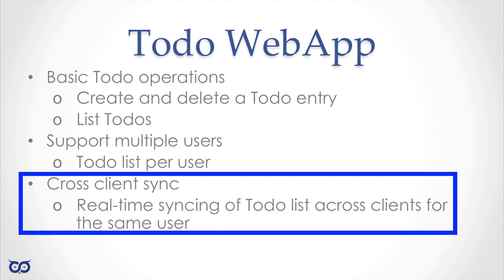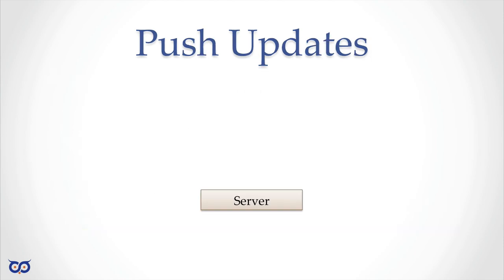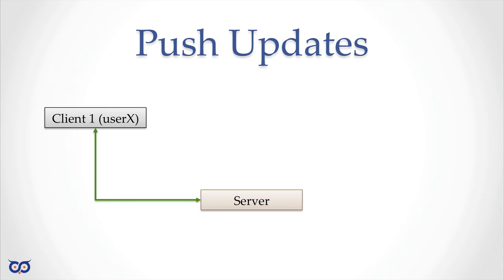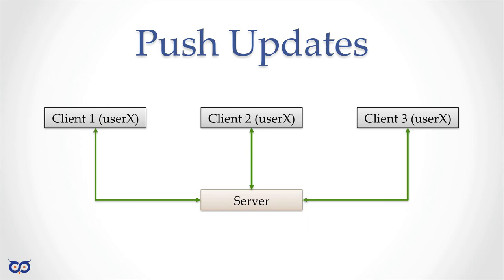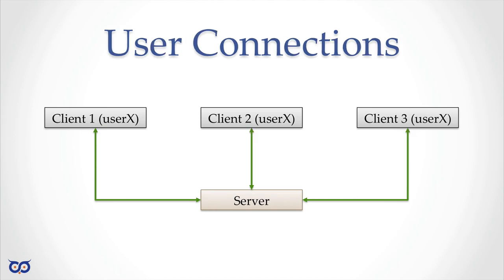If the user makes a change in one client and they're logged in on one or more other clients, we want the server to sync those changes. Essentially, the server will have a user connect from client one, the same user connects from client two, and optionally a third client. We're not limiting how many connections a user can have. When that user creates a to-do and sends it to the server, the server should copy that update and send it to each of the other connected clients.